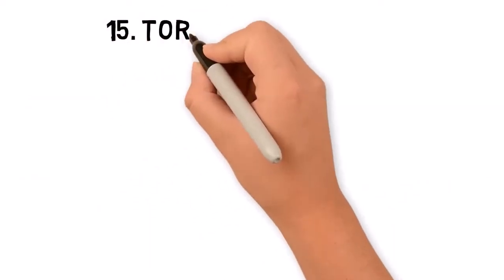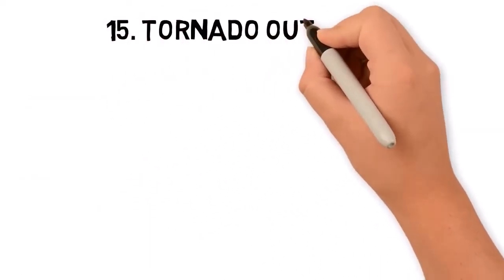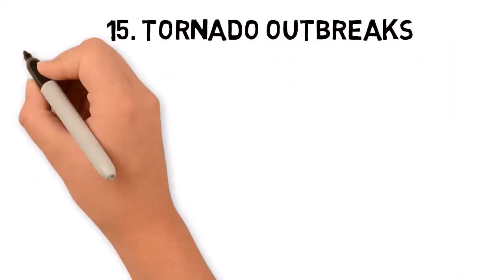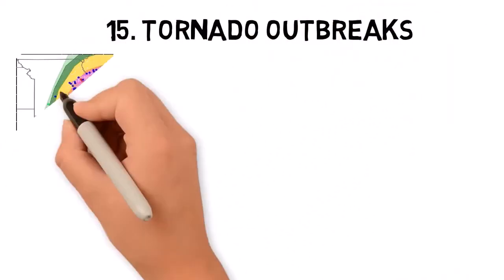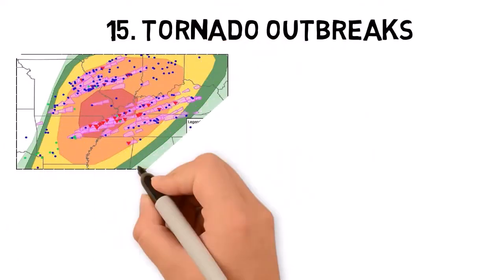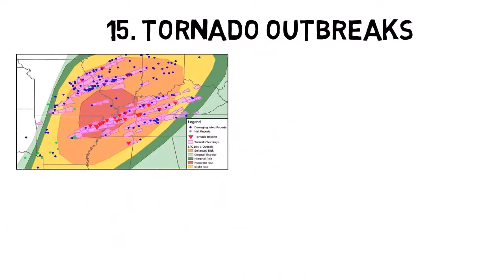Tornado outbreaks occur when multiple tornadoes form in a single weather system over a short period. These outbreaks can cause widespread destruction across large areas, leading to significant loss of life and property.